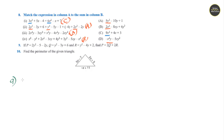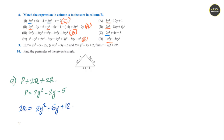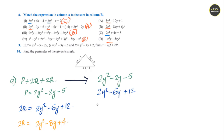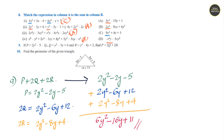Question 9: Three terms are given p, q and r. We need to find the sum p plus 2q plus 2r. p is 2y square minus 2y minus 5. 2q can be written as 2y square minus 6y plus 12. Adding all three terms: 2y square three times gives 6y square; minus 2y minus 6y minus 8y gives minus 16y; minus 5 plus 12 plus 4 is 11. Answer is 6y square minus 16y plus 11.